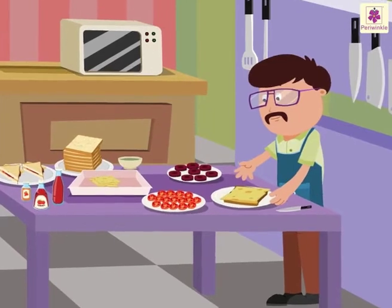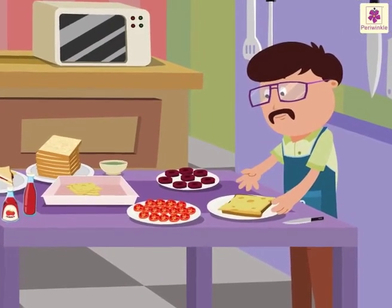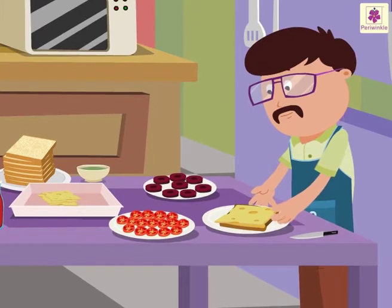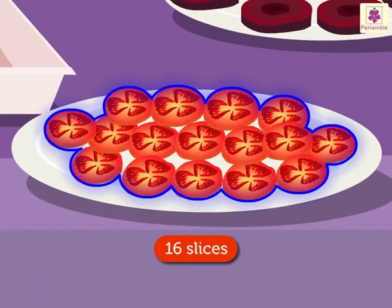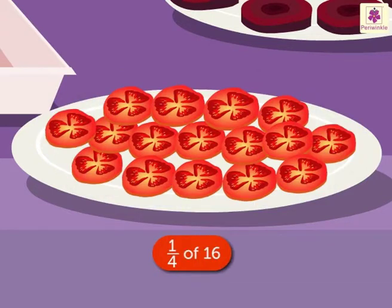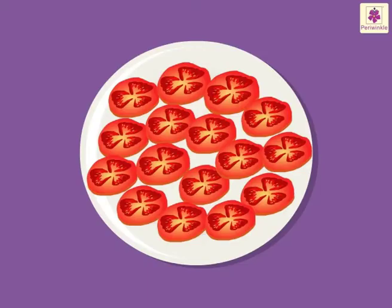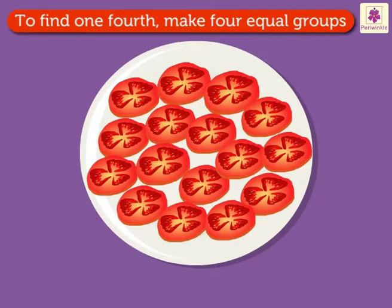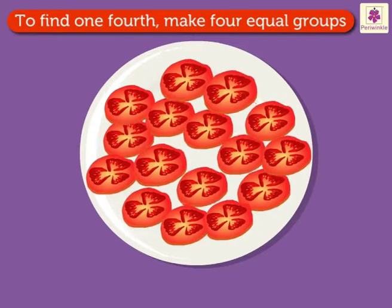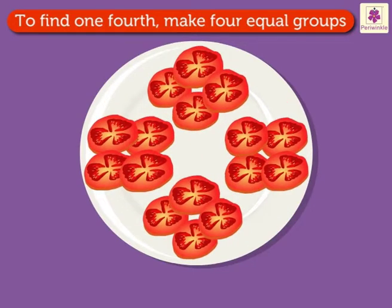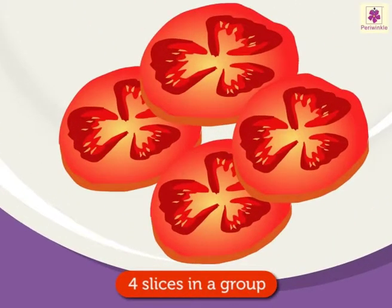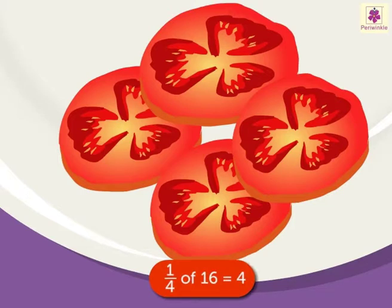Now it is time to put the tomato slices in the sandwich. Uncle Sam has sixteen slices of tomato. He used one-fourth of the tomato slices in the sandwich. To find one-fourth of sixteen, we have to make four equal groups. Each group has four tomato slices. So, one-fourth of sixteen is four.